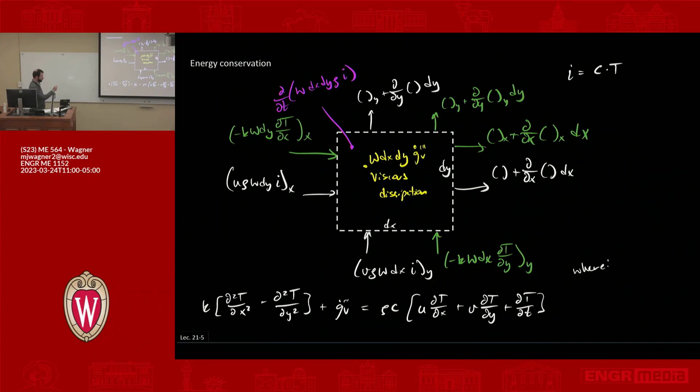And then I have to note that there's an expression for g dot triple prime v that we can just write out here. And it is, I need room. So it would be g dot triple prime v is equal to mu times partial u with respect to y plus partial v with respect to x, that quantity squared, plus 2 mu times this quantity here, which is partial u with respect to x, that partial squared, plus partial v with respect to y, that partial squared, end of quantity.